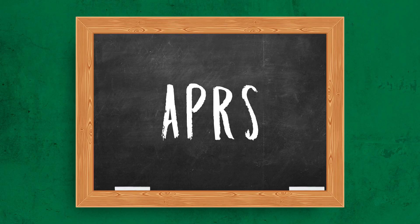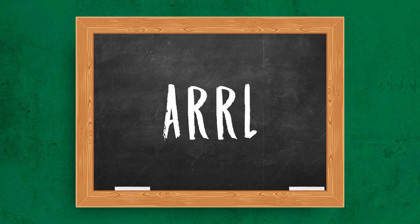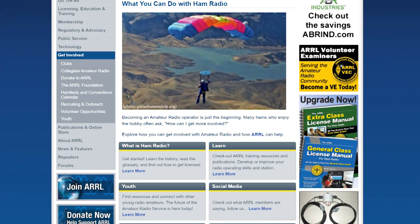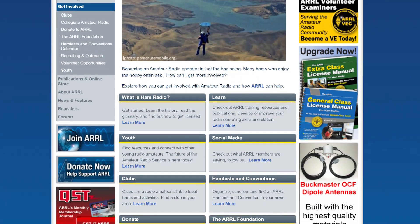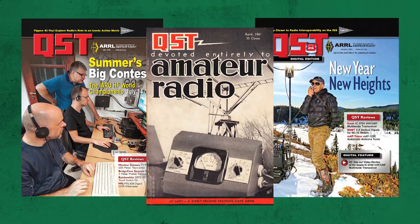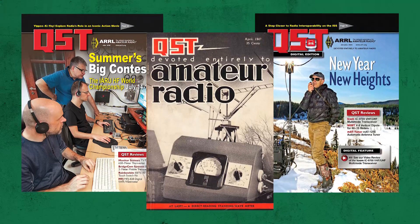APRS stands for Automatic Packet Reporting System. It's a situational awareness system used for data location services in both casual and professional environments, from road trips to emergency communications. The ARRL, also known as the American Radio Relay League, is a US-based organization of amateur radio operators. It also publishes the monthly QST magazine that a few of you may be subscribed to.